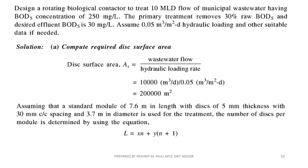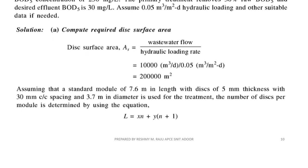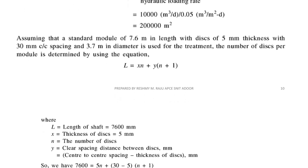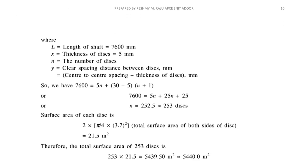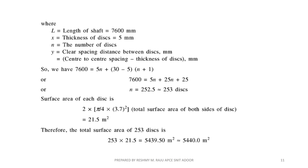For the design chamber, we use the number of disc equation: L = x·n + y·(n+1), where the length of the shaft L is 7.6 m (i.e., 7600 mm), x is the thickness of the disc equal to 5 mm, n is the unknown number of discs, and y is the clear spacing between discs. Solving this gives us 253 discs per shaft.